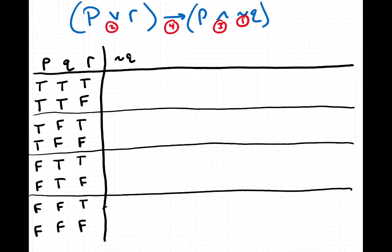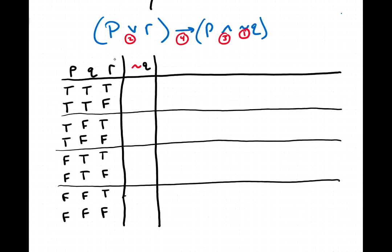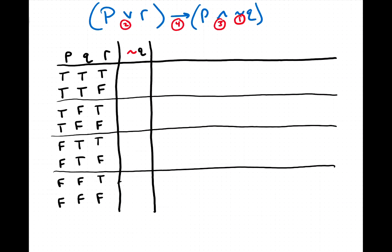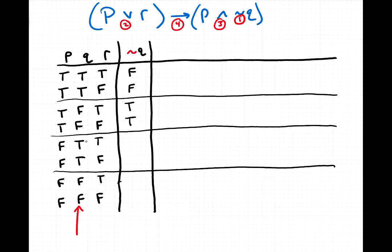Let's start with a column for not q. We take each truth value in the q column and give its negation. When q is true, not q is false; when q is true again, not q is false. When q is false, not q is true. So the not q column reads: false, false, true, true, false, false, true, true.